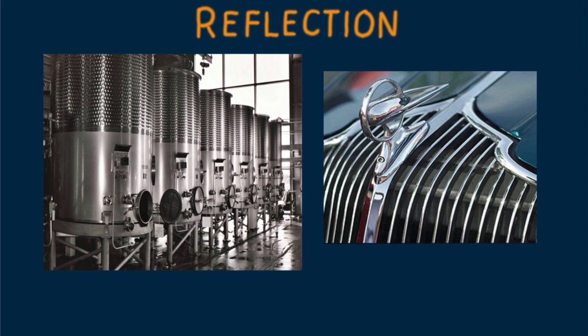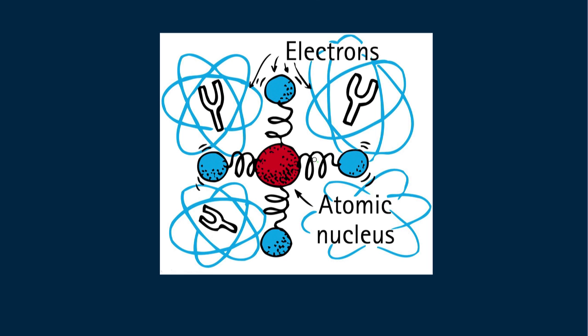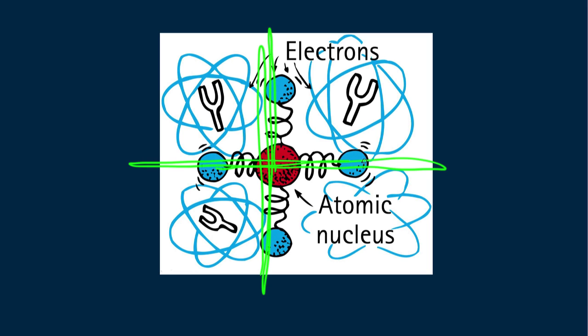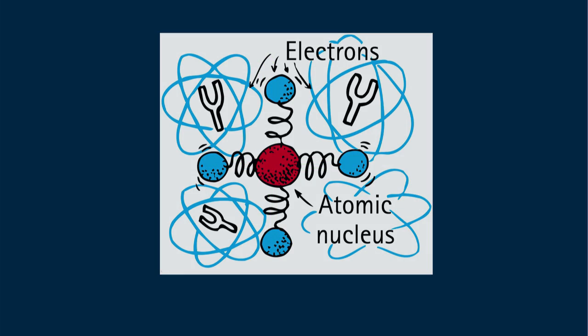In glass and other materials that don't reflect much light, electrons can vibrate only over small atomic distances. In metals, some electrons — the so-called conduction electrons — can vibrate over distances much larger than the size of an atom.